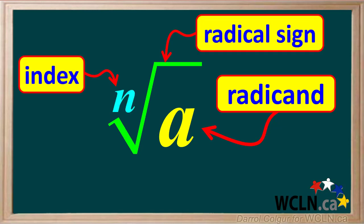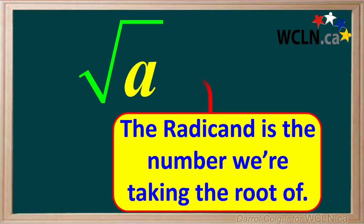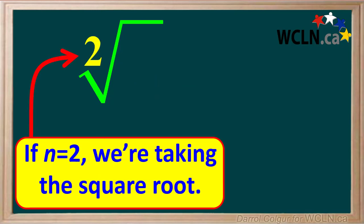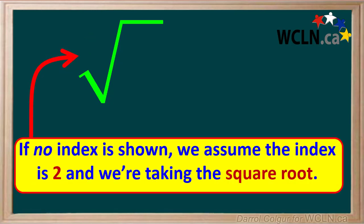Here we're showing all three parts of a radical. Make sure you know what each of these parts is called, as you will see them a lot. The radicand is the number we're taking the root of, and the index is which root we're taking. For example, if n equals 2 we're taking the square root. Square roots are by far the most common roots we take, so we often leave out the 2 where the index goes. If no index is shown, we assume the index is 2 and we're taking the square root.